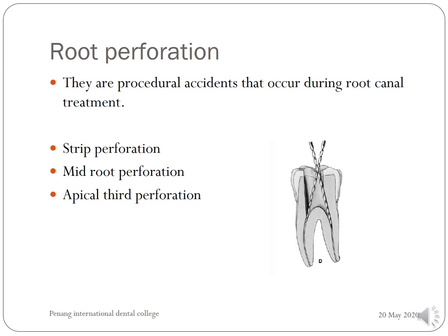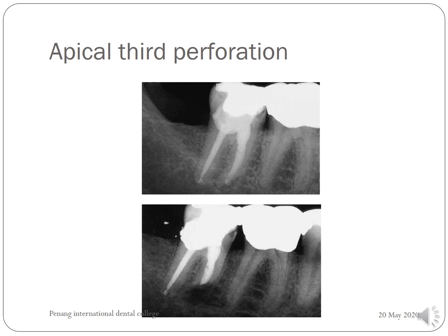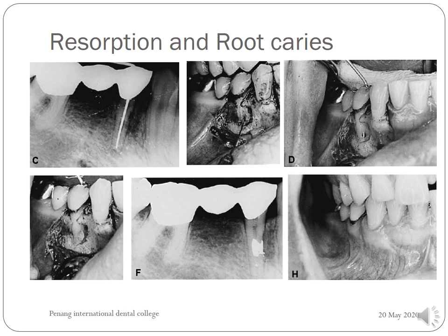Root perforation accidents during root canal treatment can include stripped mid-root perforation or apical third perforation. Using the same flap designs described, expose the root and do the corrective procedure, then close the flap. For resorption and root caries defects, the flap is raised, the root is exposed, an amalgam filling is replaced, and the flap is repositioned and closed. Logical root amputation procedures are the way to eliminate weak or diseased roots that cannot be treated anymore — analogous to what they do for a diabetic foot.